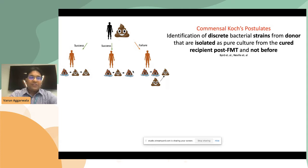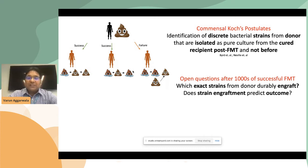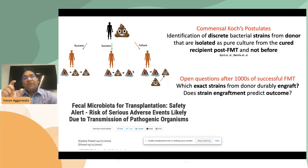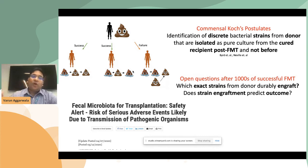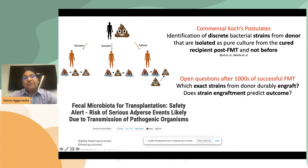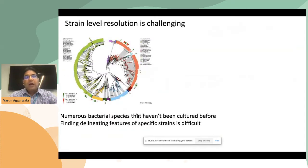After tens of thousands of successful FMTs, we still don't know which exact strains from the donor durably engraft in the recipient, or whether strain engraftment can even predict the outcome. Furthermore, identifying strain transmission could help us define a specific set of microbes for therapeutics — in contrast to whole-stool FMT — because the FDA recognizes that whole-stool FMT carries risks for adverse events due to transmission of pathological organisms.